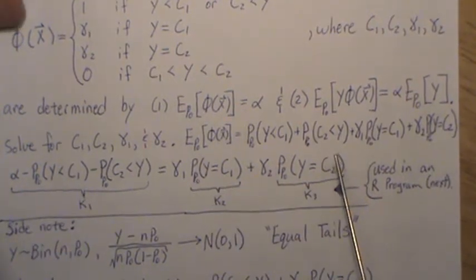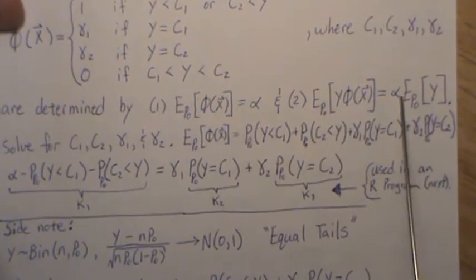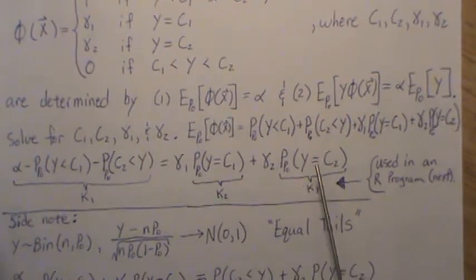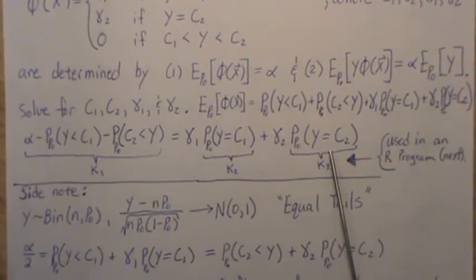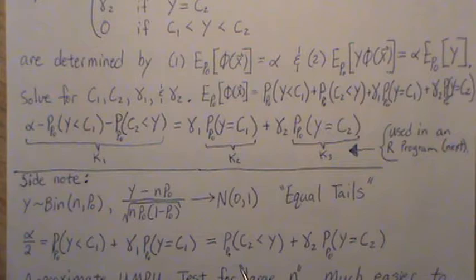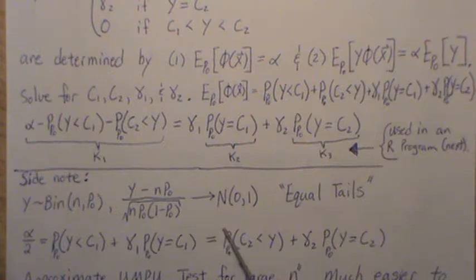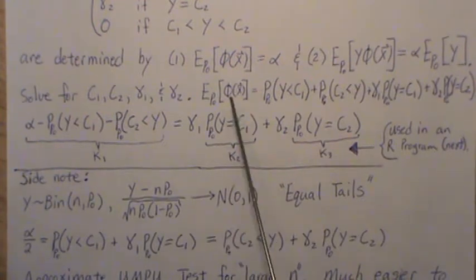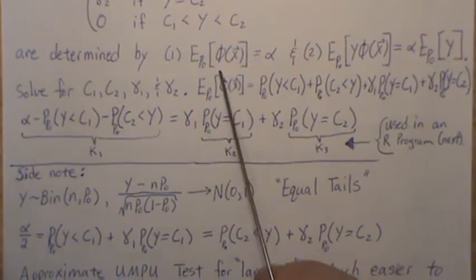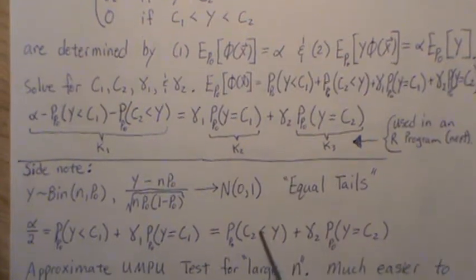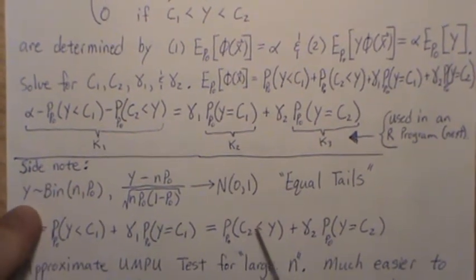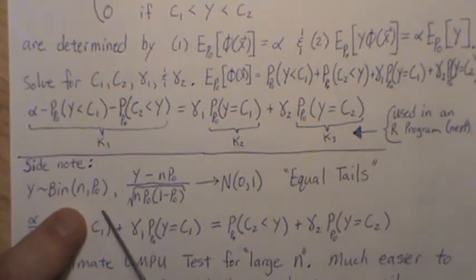So we have alpha minus these two pieces, and then we're left with gamma one and gamma two. I do it this way because in the R video, the next video, I have an R program that will calculate all this for us. We're going to call this k1, this k2, k3, and we're creating unknowns gamma one and gamma two, and then we'll solve it in a unique way.